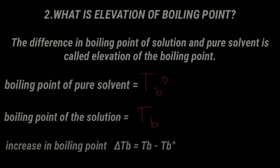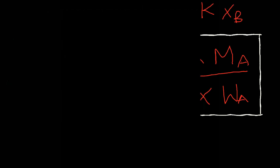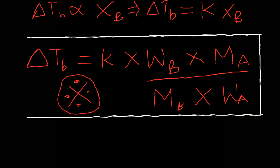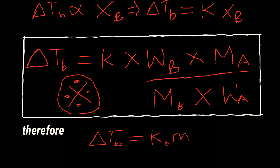For dilute solutions, delta T_b is directly proportional to mole fraction. So delta T_b equals k times w_b times M_a divided by M_b times w_a. Therefore, delta T_b equals K_b times m, where K_b is the boiling point elevation constant, also called the molar elevation constant or ebullioscopic constant.